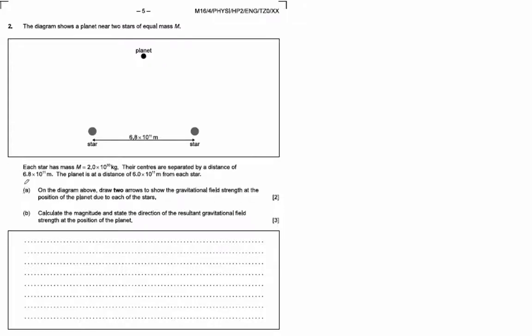All right, so on the first one here, they're going to want you to draw arrows emanating from this planet. Remember that these stars have the same mass, and remember that gravitational fields are in the direction toward the mass.